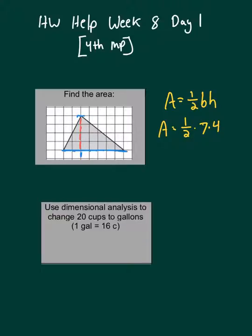And if I multiply half times seven times four, I get 14. And it would be square units because they don't label units anything else. So that's square units. All right.